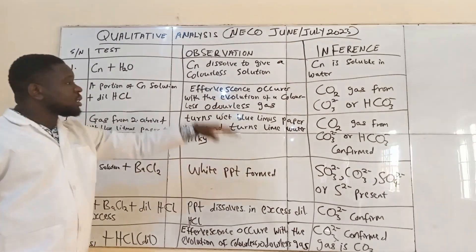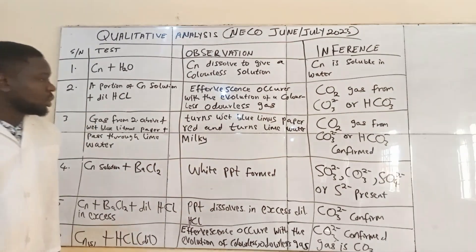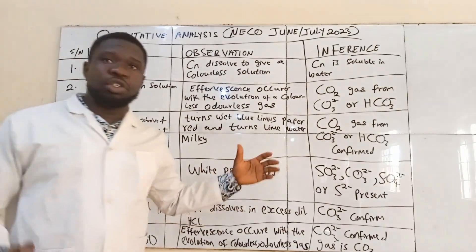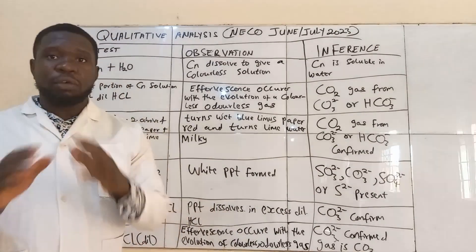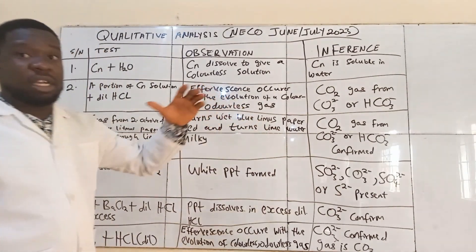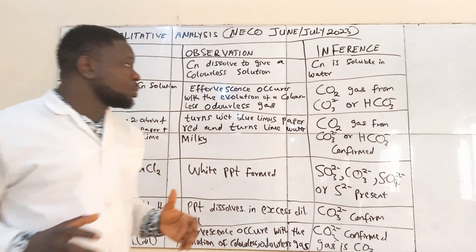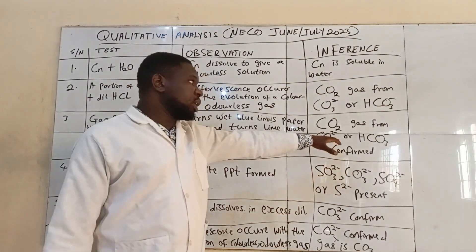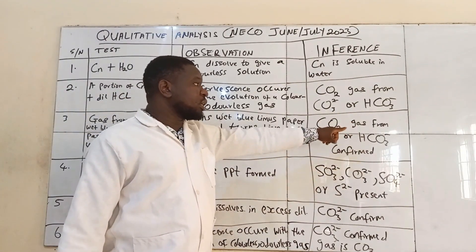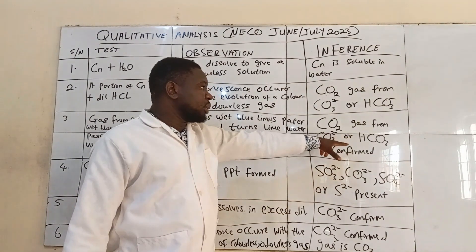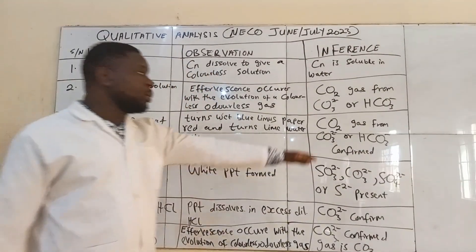You will notice that the gas turns the wet blue litmus paper red and turns the lime water milky. If it turns the wet blue litmus paper red and turns the lime water milky, then it is a confirmation that this gas is CO₂ gas. CO₂ gas can only come from the CO₃²⁻ ion or the HCO₃⁻ ion, so its presence is confirmed.